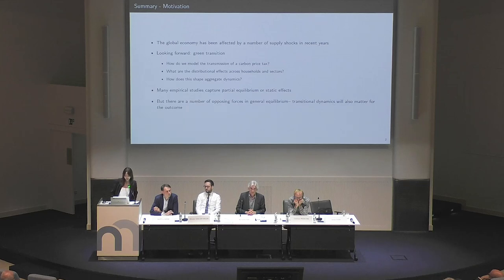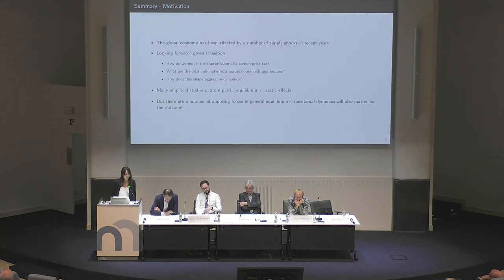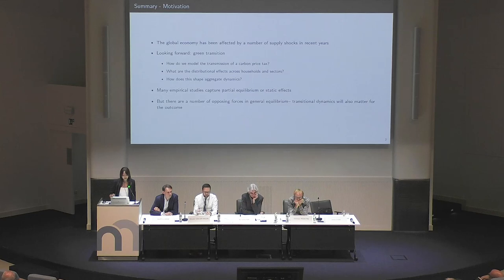How do we model the transmission of a carbon price tax? How does the tax affect households versus firms? Which households will be affected and how? Which sectors will be affected? Does this matter for aggregate dynamics — what are the implications for output and inflation? And how long will it take for the tax to affect domestic inflation, and through what channels? Many empirical studies capture partial equilibrium or static effects, but the key message of this paper is that there are opposing channels in general equilibrium that we need to model and quantify.